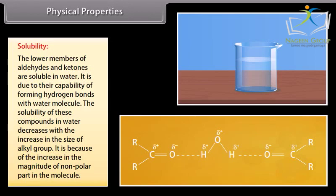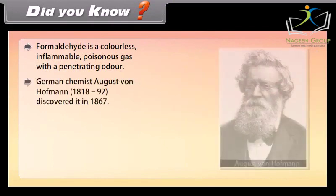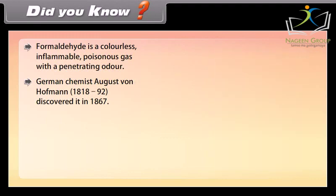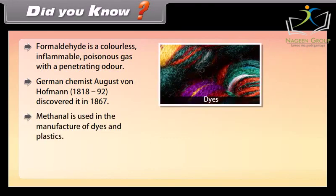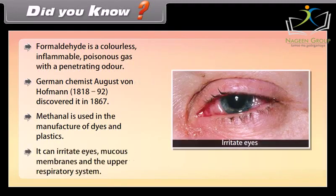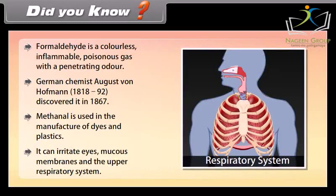Did you know? Formaldehyde is a colourless, flammable, poisonous gas with a penetrating odour. German chemist August von Hoffmann (1818–1892) discovered it in 1867. Methanal is used in the manufacture of dyes and plastics. It can irritate eyes, mucous membranes and the upper respiratory system.